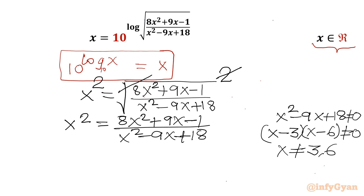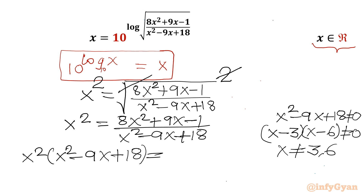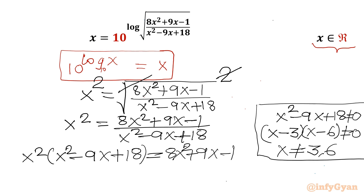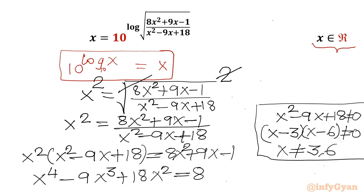Now I can cross multiply. So x² times (x² − 9x + 18) equals 8x² + 9x − 1. Multiplying the left-hand side gives x⁴ − 9x³ + 18x² equals 8x² + 9x − 1.